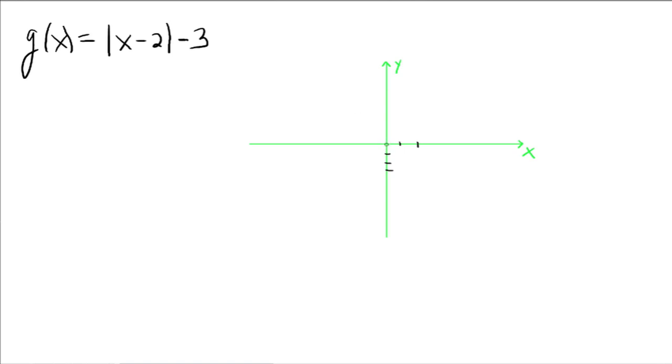So our original function of the absolute value of x had that point, the sharp point, at the origin, 0, 0. Well, now the sharp point is moving two units to the right, but three units down. It's going to be right here. All right, and so then we just have our V-looking shape.